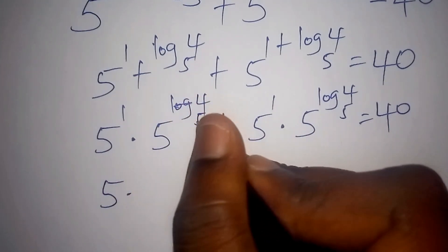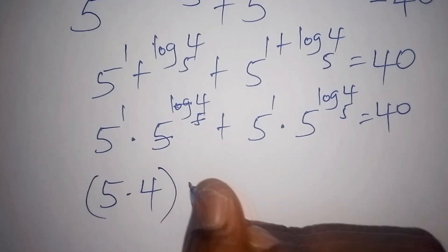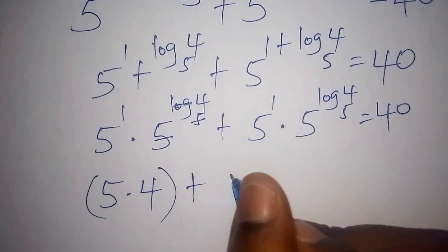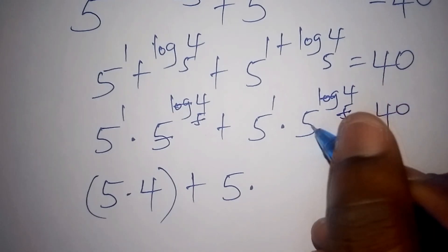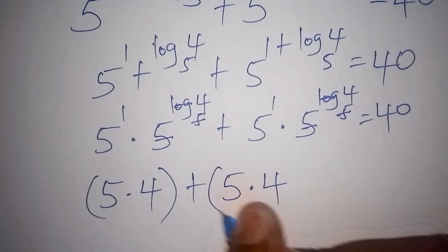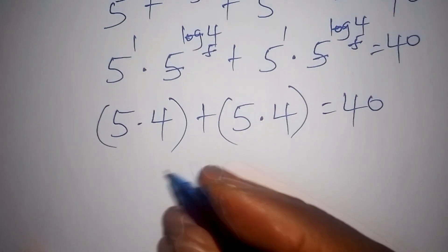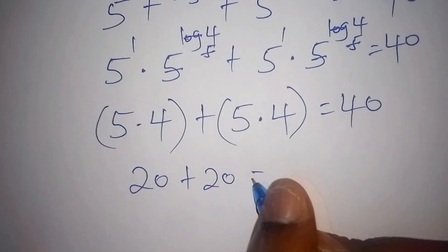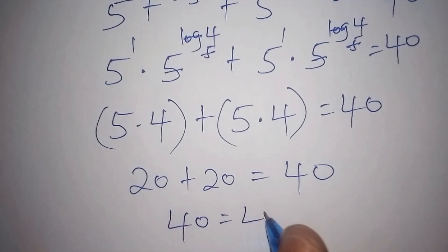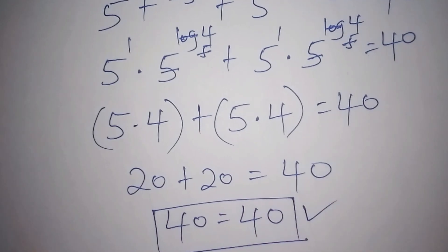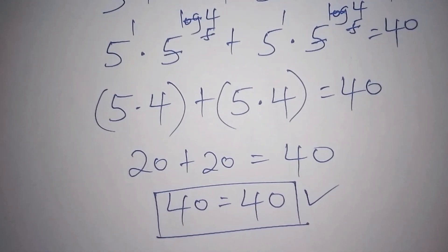Since 5 to the log of 4 base 5 simplifies to 4 (log base 5 cancels the 5), we get 5 times 4 plus 5 times 4, which is 20 plus 20, equals 40. So 20 plus 20 is 40, confirming our answer is correct. Don't forget to subscribe to our channel.